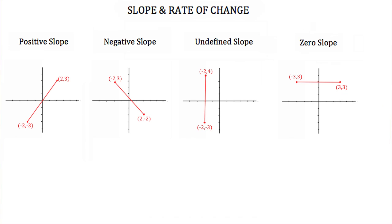Now there are four basic types of slope. If your line is sloping upwards and to the right, it has a positive slope. If it is sloping downward and to the right, it has a negative slope. So if you're going uphill, you have a positive slope, and if you're going downhill, you have a negative slope. A vertical line is said to have an undefined slope, and a horizontal line, just like we saw, has a zero slope.